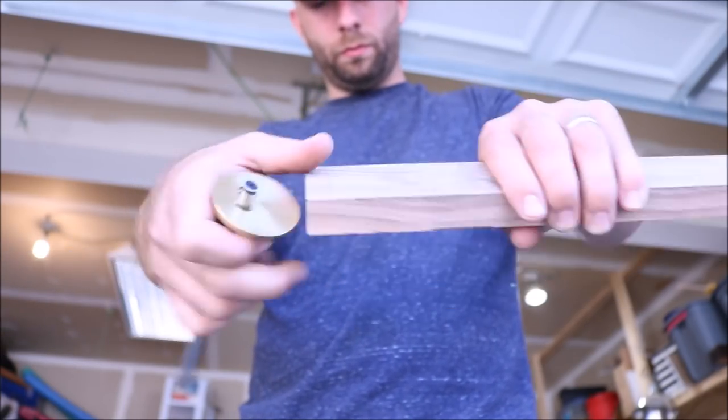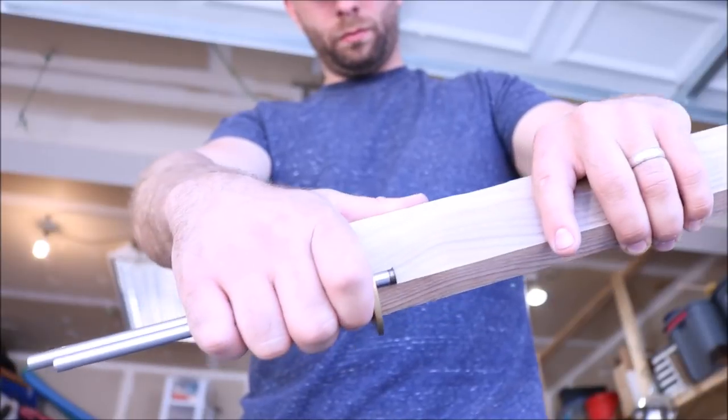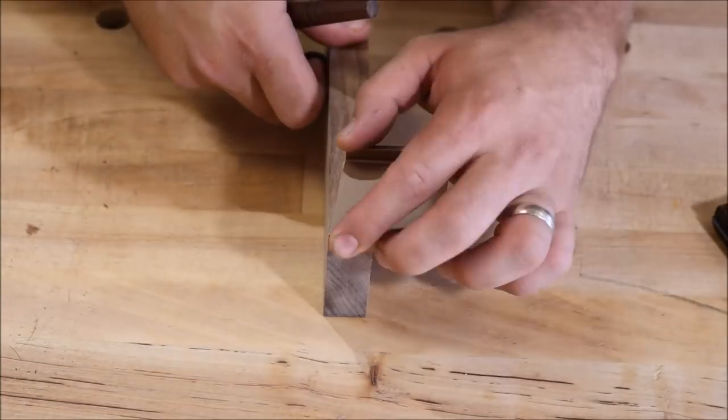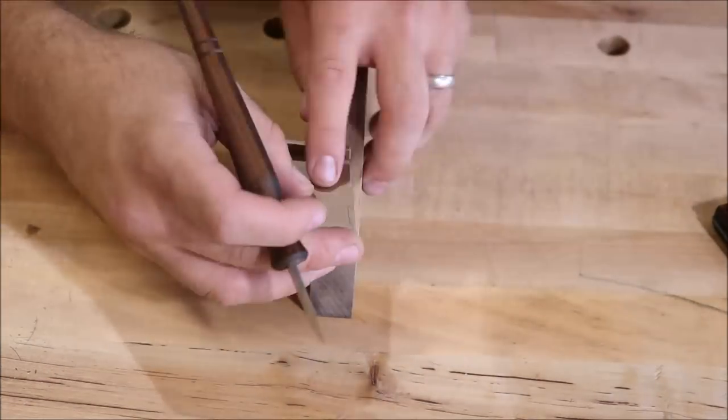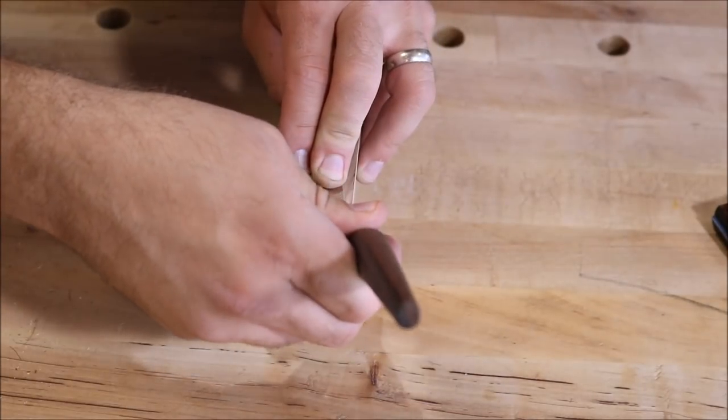I'll start by using a marking gauge to create my shoulder line. Then I'll use this little dovetail guide to create the angles of my dovetail. And I think it's a 1 in 6 ratio.